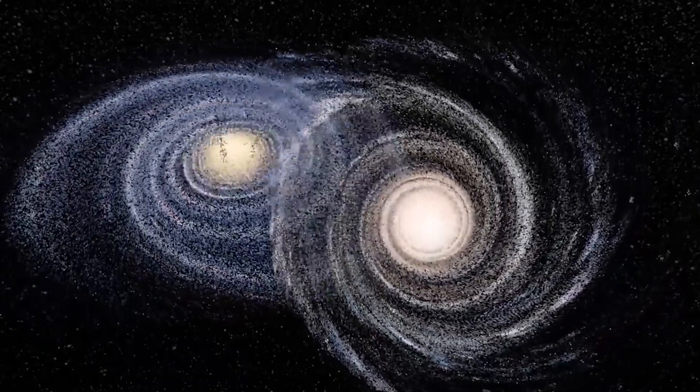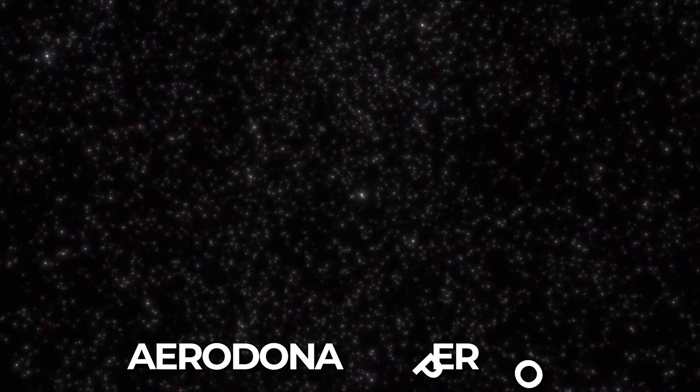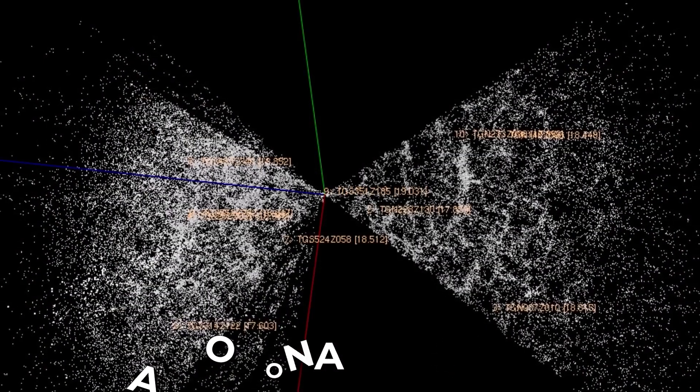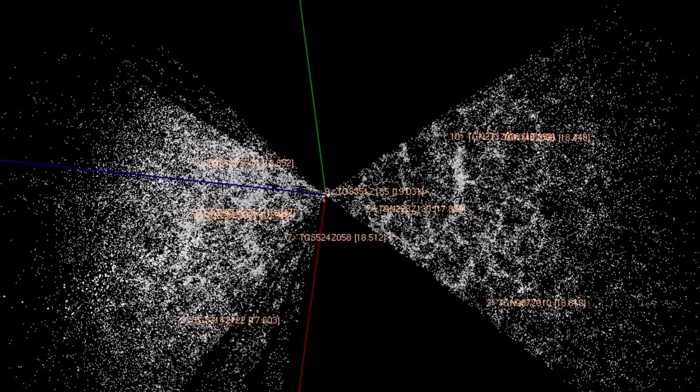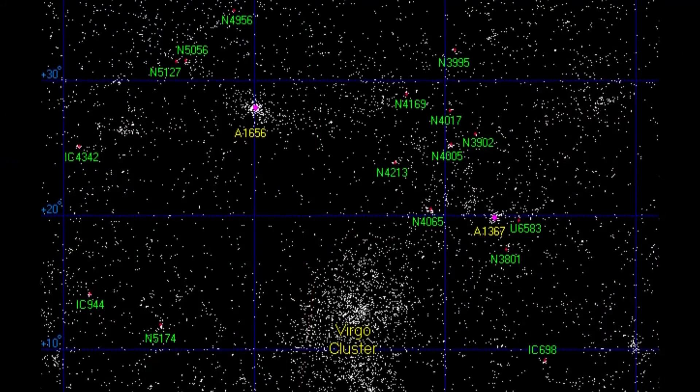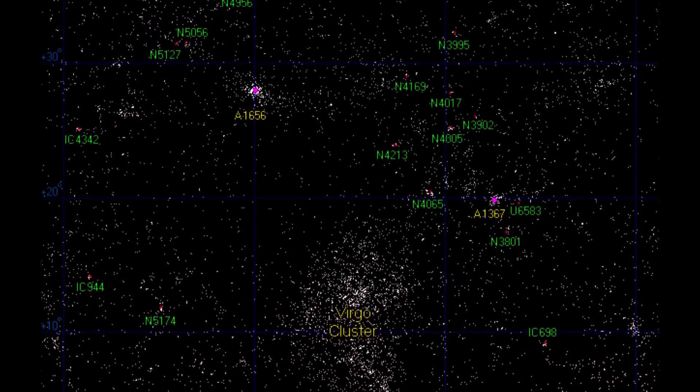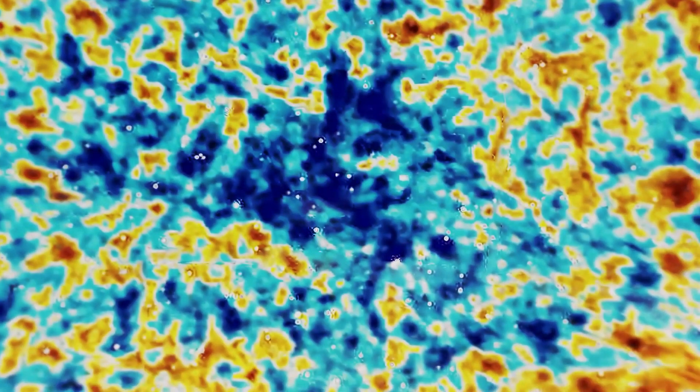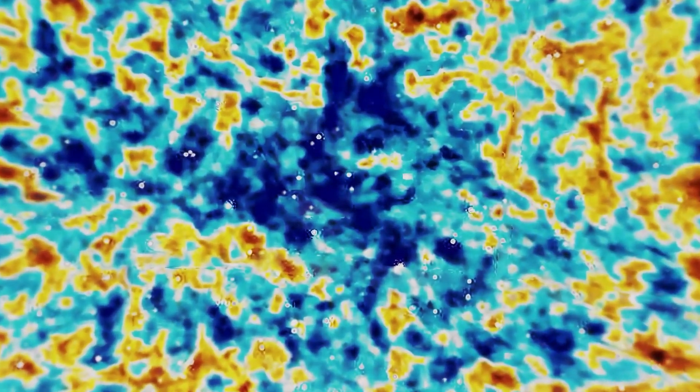As we venture further into the cosmic sea, we encounter another vast emptiness, the Eridanus Supervoid. This supervoid, named after the constellation in which it's observed, is not just any void. It's a superhollow, one of the largest structures ever discovered in the universe.